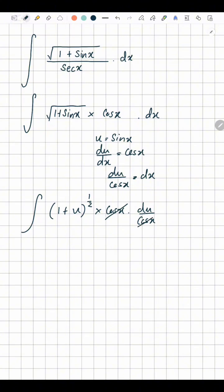All you have to integrate is (1 + u)^(1/2). So that's (1 + u)^(1/2 + 1) divided by (1/2 + 1), plus C.